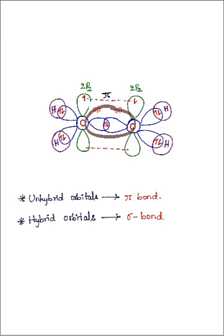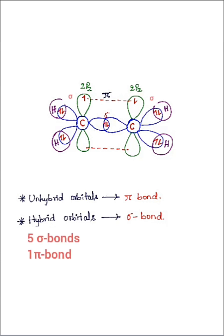Thus ethylene contains five sigma bonds and one pi bond. Finally, the shape of ethylene — C2H4 — is trigonal planar and the bond angle is 120 degrees. This is the shape and geometry of the ethylene molecule, in which carbon has sp2 hybridization.